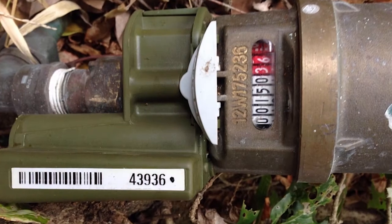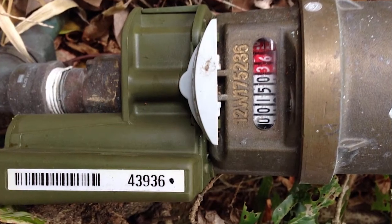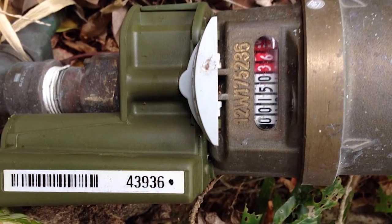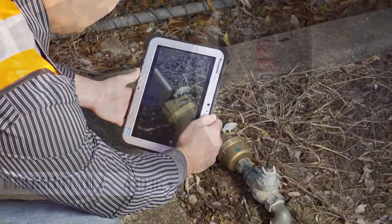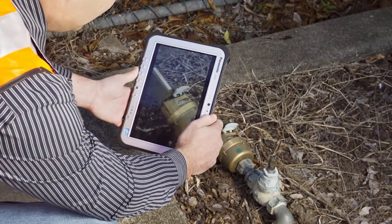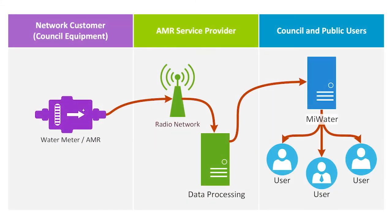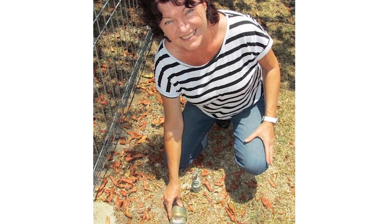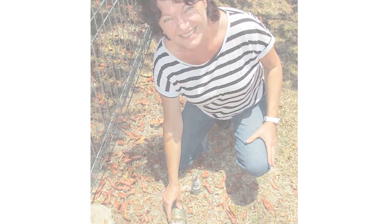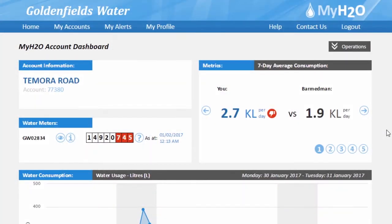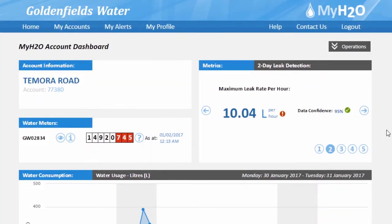Goldenfields Water County Council has rolled out automatic meter reading technology to 99% of properties across our supply area. This technology allows for water usage data to be collected every hour from water meters. MyH2O now places this amazing technology at your fingertips.